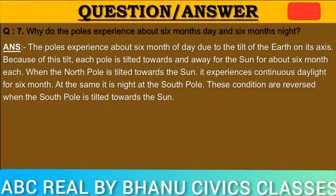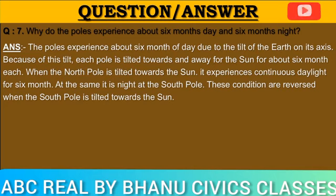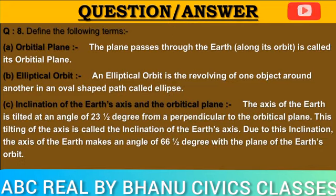Question number seven: Why do the poles experience about six months of day and six months of night? Answer: The poles experience about six months of day due to the tilt of the earth on its axis. Because of this tilt, each pole is tilted towards and away from the sun for about six months each. When the north pole is tilted towards the sun, it experiences continuous daylight for six months, while at the same time it is night at the south pole. These conditions are reversed when the south pole is tilted towards the sun.